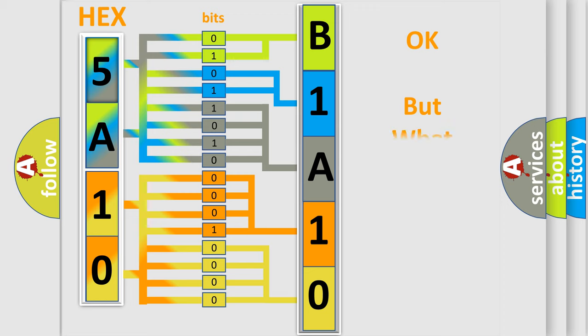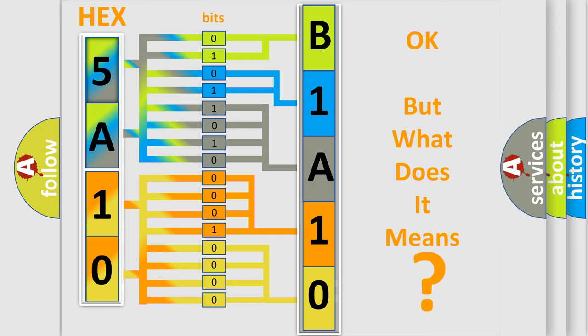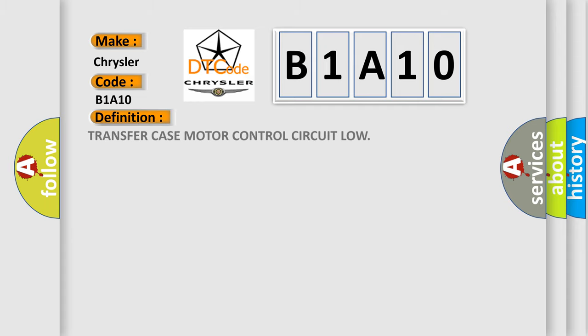We now know in what way the diagnostic tool translates the received information into a more comprehensible format. The number itself does not make sense to us if we cannot assign information about what it actually expresses. So, what does the diagnostic trouble code B1A10 interpret specifically for Chrysler car manufacturers?